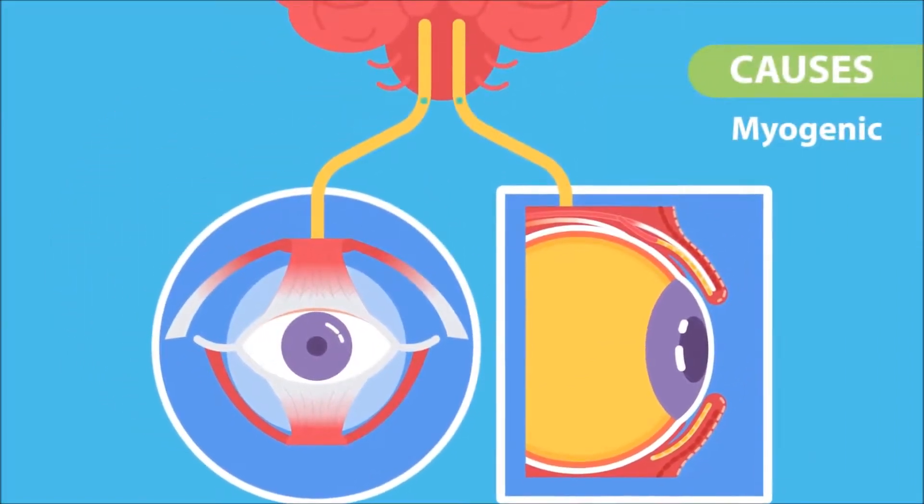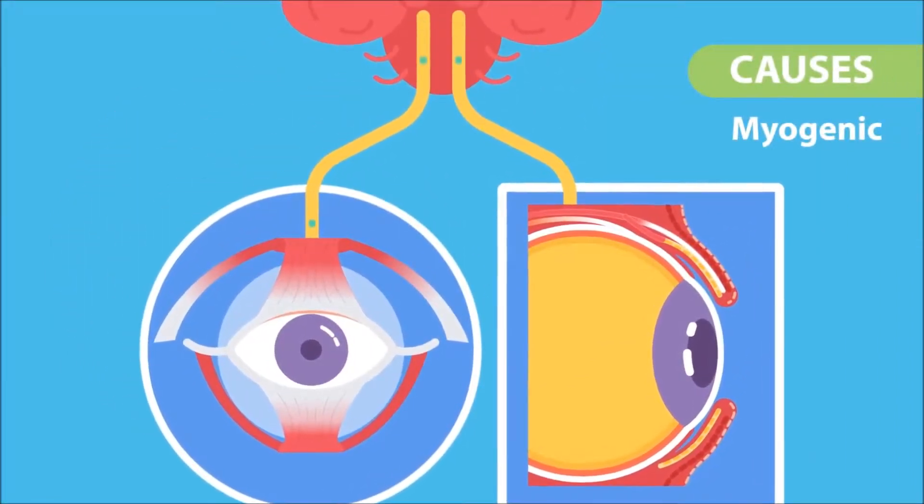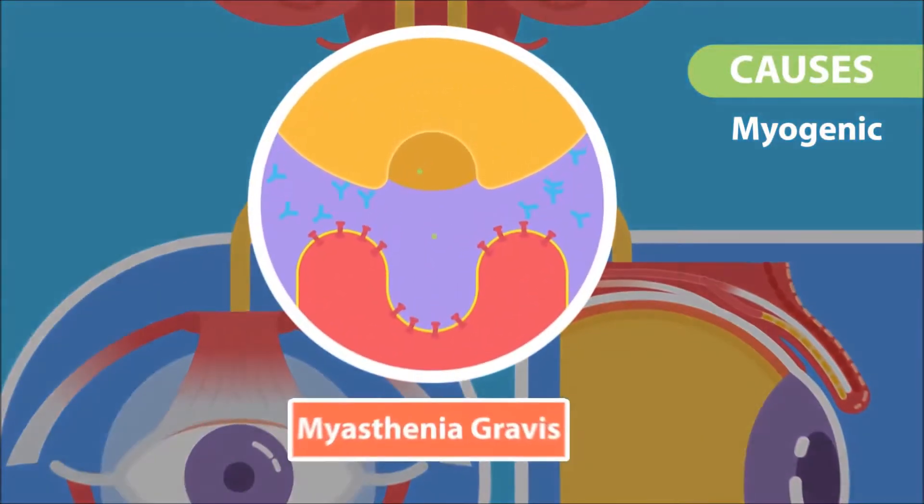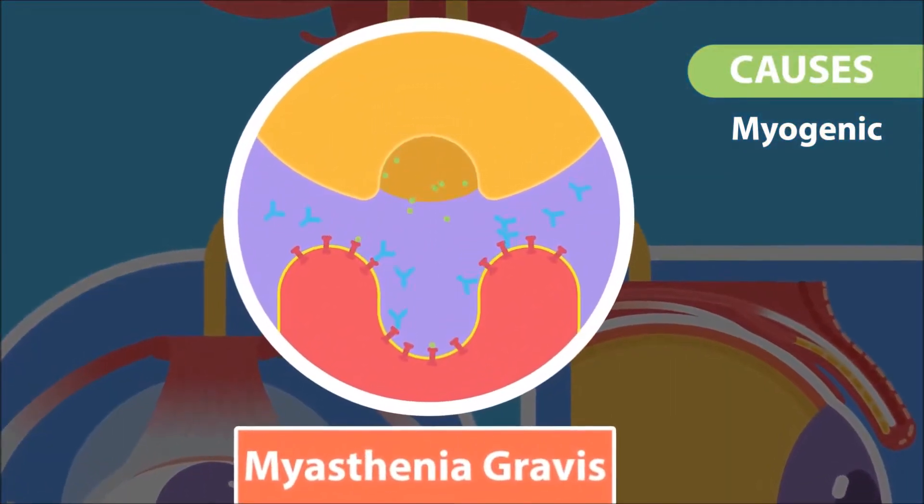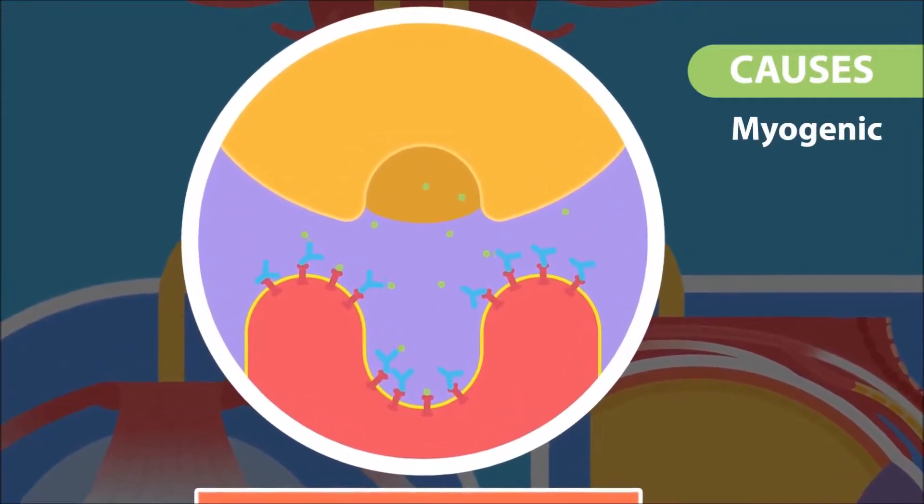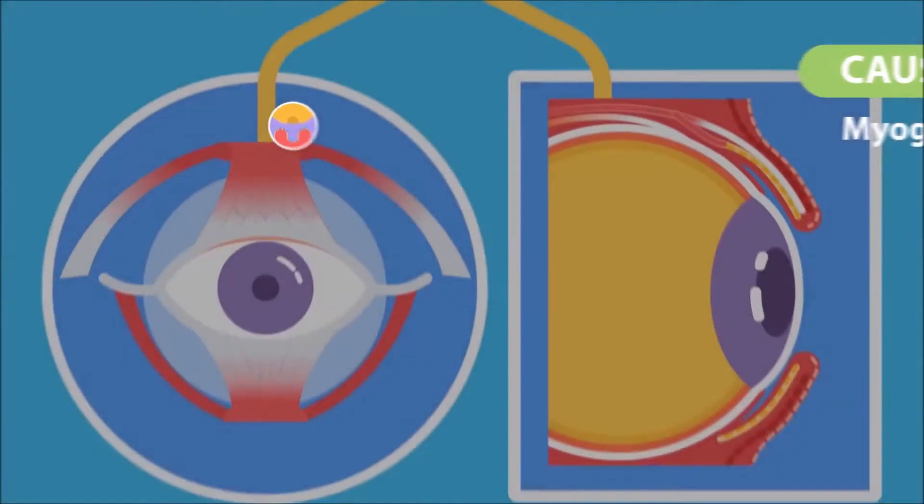Two: myogenic. A) impairment of transmission of impulses from the nerve to the muscle at their junction, e.g. myasthenia gravis. B) myopathies which means pathology of the muscle itself is directly affecting the muscles involved in eyelid lifting.